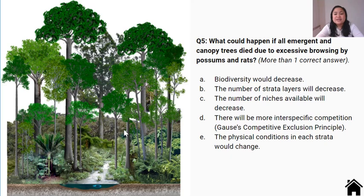Question five: What would happen if canopy trees died due to excessive browsing by possums and rats? There's more than one correct answer. A. Biodiversity would decrease. B. The number of strata would decrease. C. The number of niches available will decrease. D. There will be more inter-specific competition (Gause's competitive exclusion principle). E. The physical conditions in each strata would change.